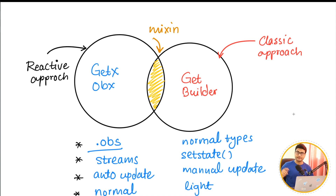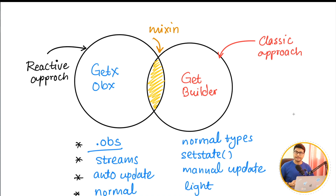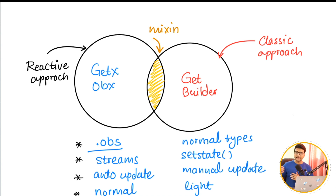The second approach, which I personally prefer, is the reactive approach. You create an observable variable, that variable is bound to your user interface, and anytime you change the value it automatically updates the UI — you don't have to call update at all.